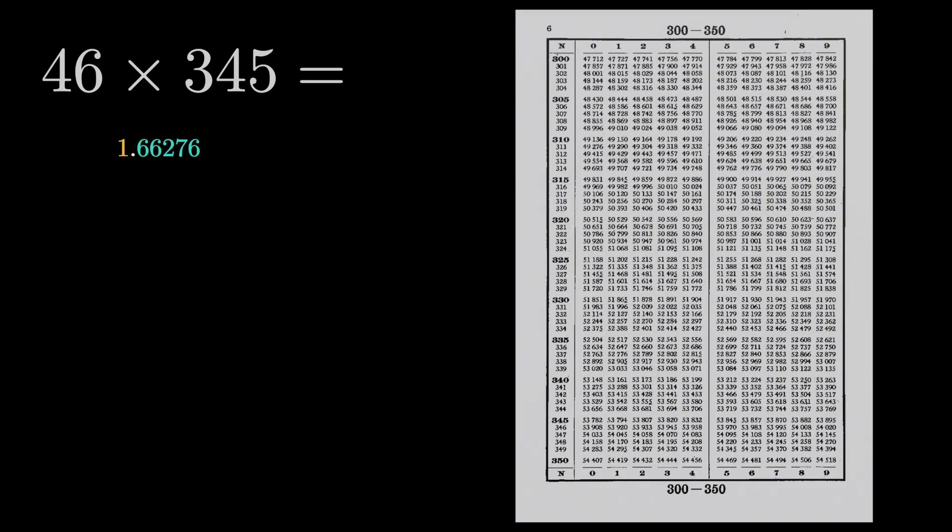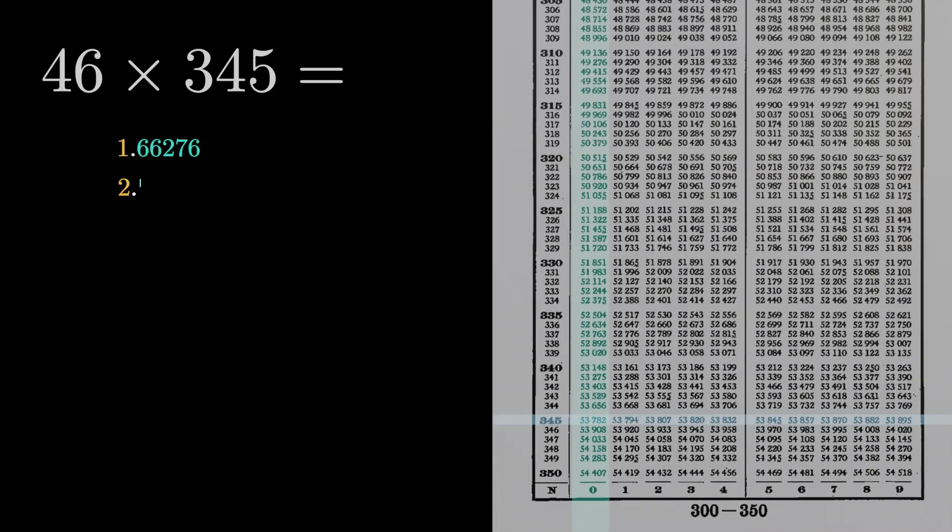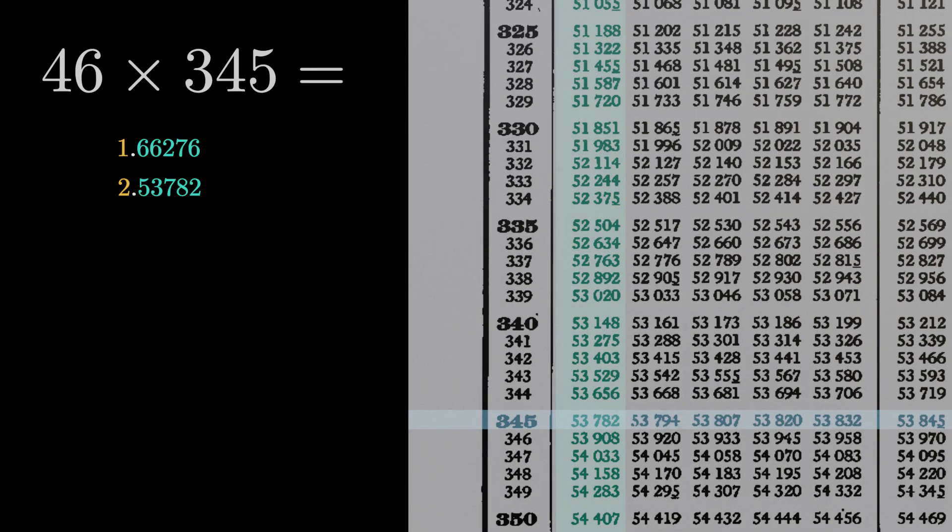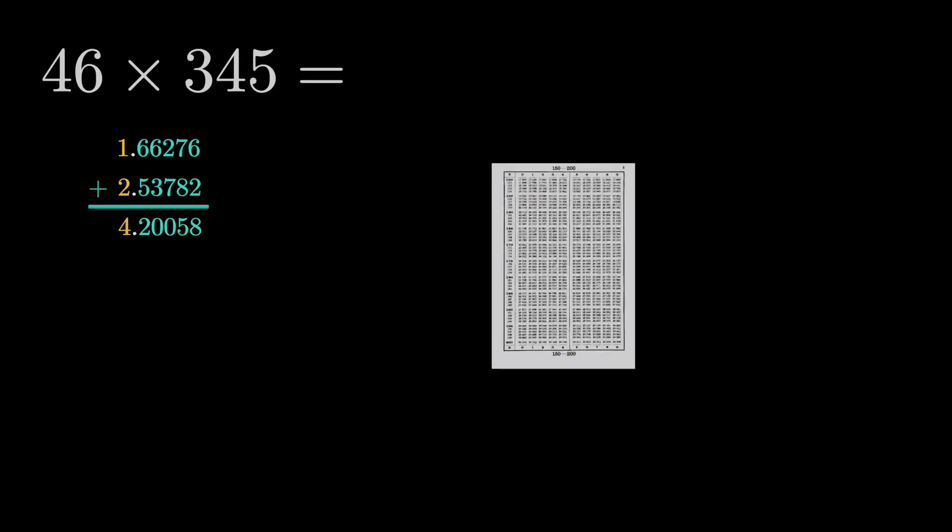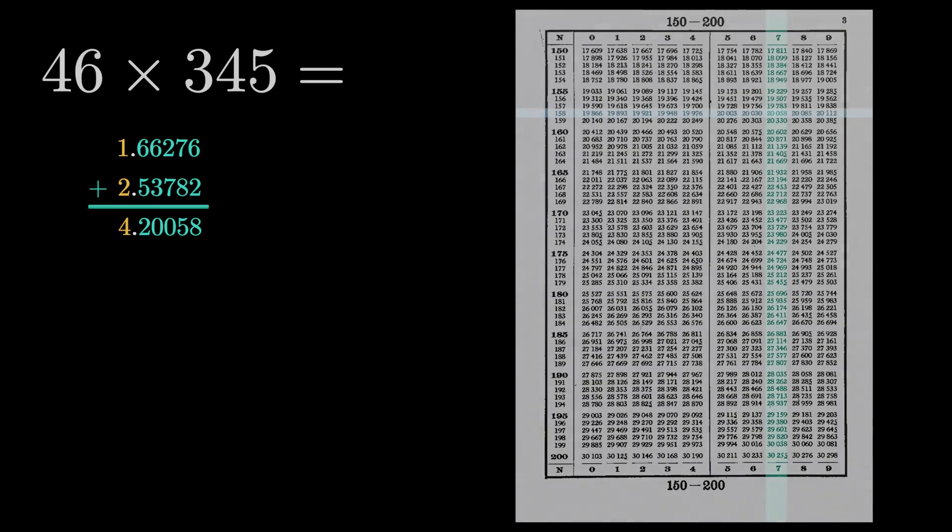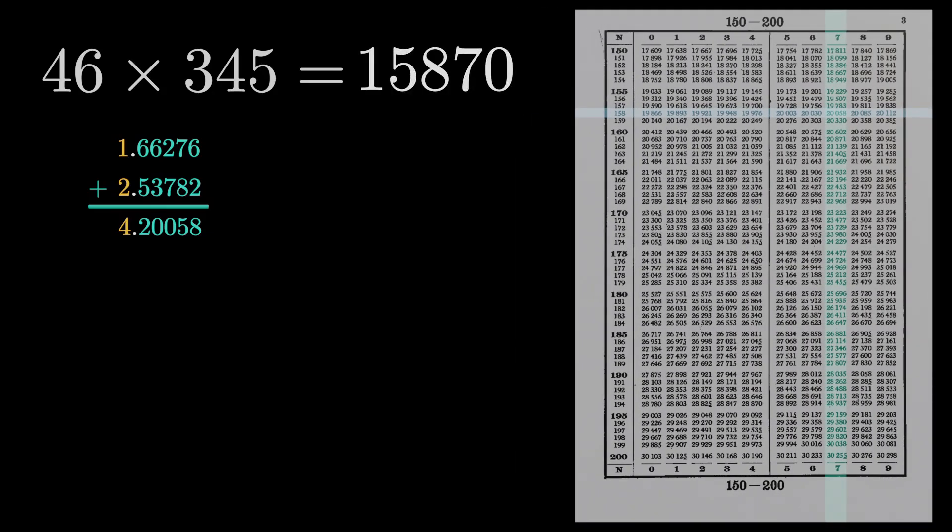The value before the decimal point just counts the number of digits reduced by 1. 36 is larger than 10, therefore its logarithm starts with a 1. 345 is larger than 100, therefore its logarithm starts with a 2. The sum of the two values is 4.20058. We search for the mantissa and find the corresponding digits 1587. The leading 4 shows that we need a number larger than 10,000 and therefore the answer is 15,870. Did you get it?